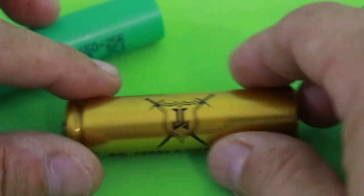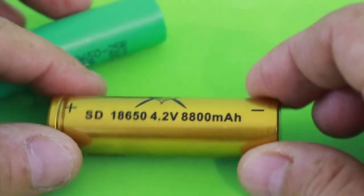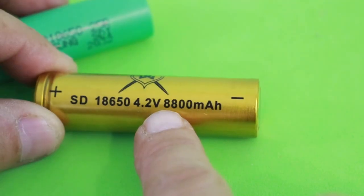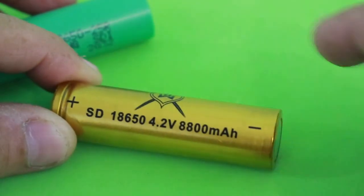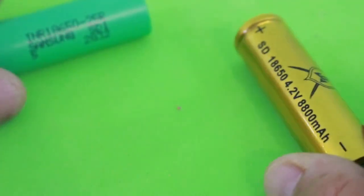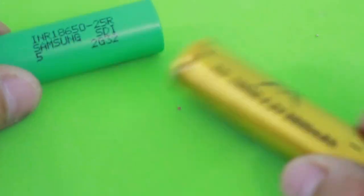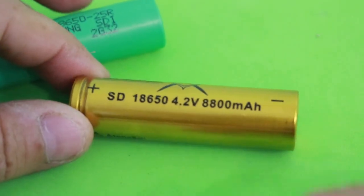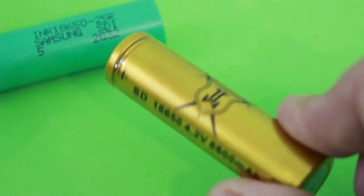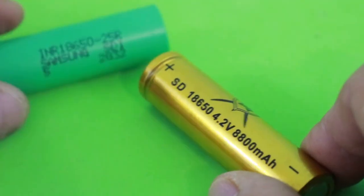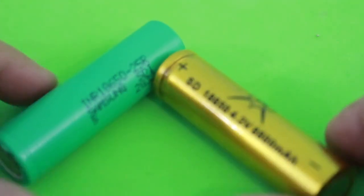The other one is a Chinese battery. Supposedly it is 8800 milliamps. That is more than triple the Samsung, which I really doubt. I think this is a fake battery but we will see that by checking the capacity.